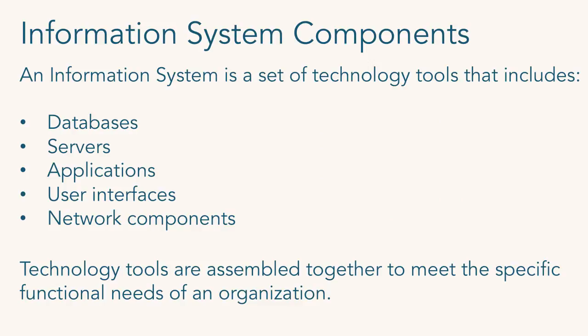Information systems use all of the components that are part of IT. Things like servers, networks, databases, and user interfaces are all used to build an information system. Most information systems share common components — every information system tends to have a database, a front-end application, and is hosted on a server. That's the bread and butter. But each information system, even though they share a lot of common components, is designed to serve a specific purpose, and that purpose determines how it's used, who's consuming the information, and how it's managed.